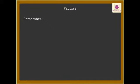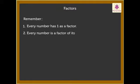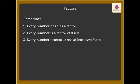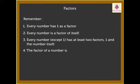Remember, every number has 1 as a factor. Every number is a factor of itself. Thus, every number except 1 has at least 2 factors, 1 and the number itself. The factor of a number is always equal to or less than the number.